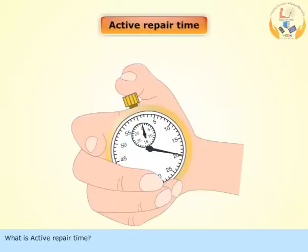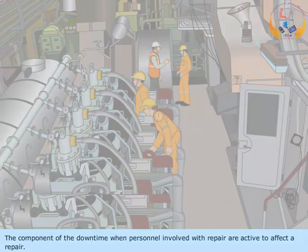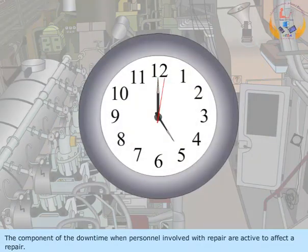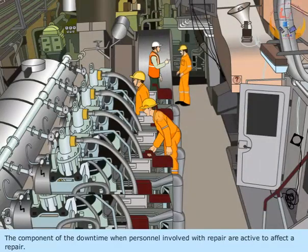What is Active Repair Time? It is the component of the downtime when personnel involved with repair are active to affect a repair.